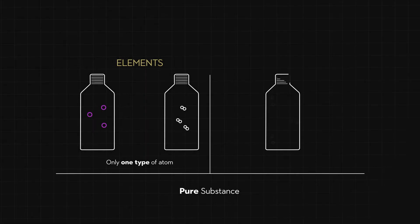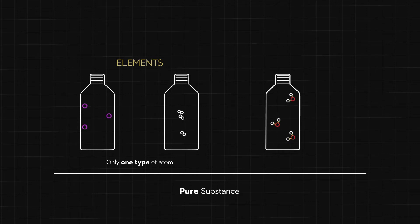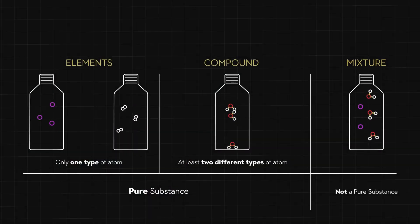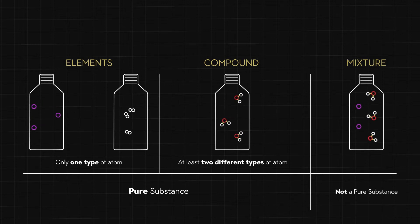So what happens when atoms of different elements combine to form new substances? Consider a container filled with triplet balls, with one red and two white balls representing water molecules. These molecules consist of hydrogen and oxygen atoms bonded together. This creates a compound, which is a substance made up of at least two different types of atoms, but it is still a pure substance because each molecule is the same. Finally, when different substances are physically combined without forming new chemical bonds, a mixture is formed. Unlike elements and compounds, mixtures retain the individual properties of their components and are not pure substances.